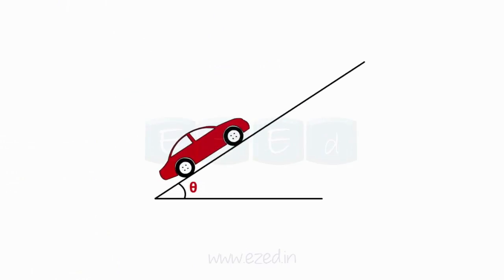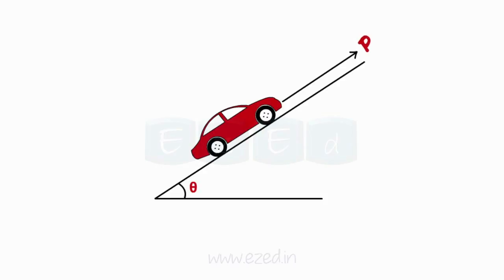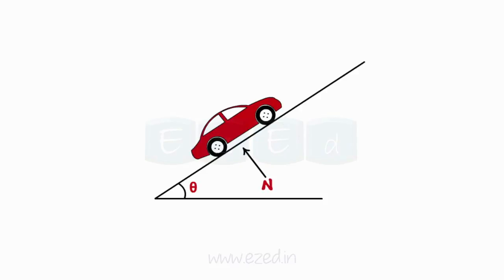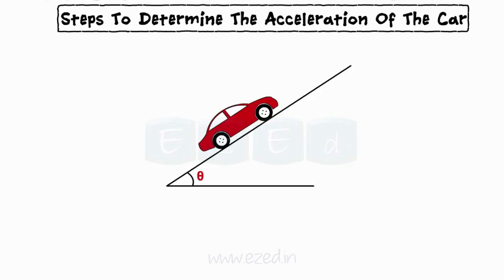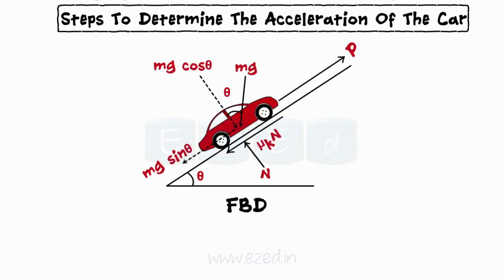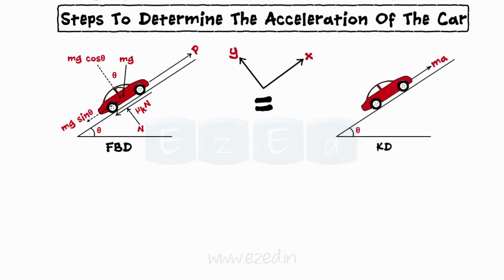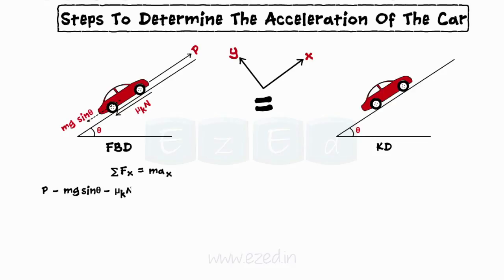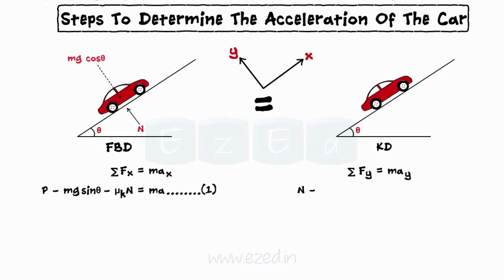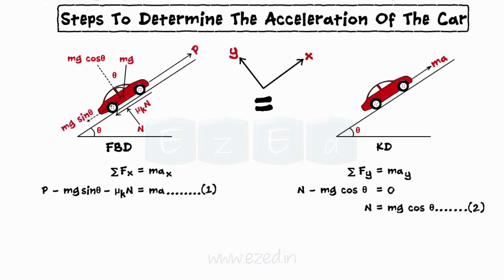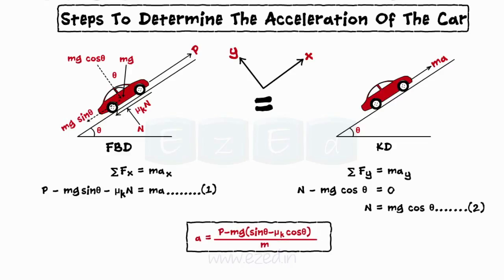Consider a car of mass M being pulled up an inclined plane by force P, applied parallel to the plane. The friction force acts opposite to the direction of motion: mu K multiplied by N. The normal force acts to oppose the weight of the car. Steps to determine the acceleration: Step 1 — draw the free body diagram showing all forces. Step 2 — draw a kinetic diagram showing the M-a vector. Step 3 — apply Newton's second law in the x direction to get equation 1, then in the y direction to get equation 2. Substituting the value of N in equation 1 gives the acceleration of the car.